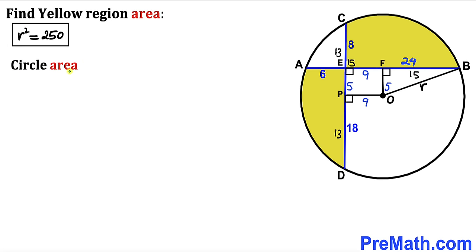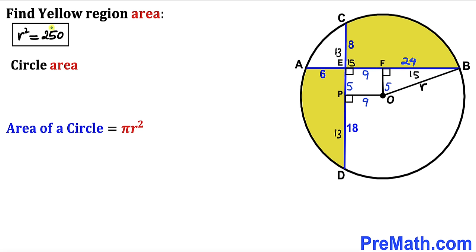Now we calculate the area of the circle. Recalling the area formula: area equals π R squared. We already found R squared equals 250, so the circle area is 250π.